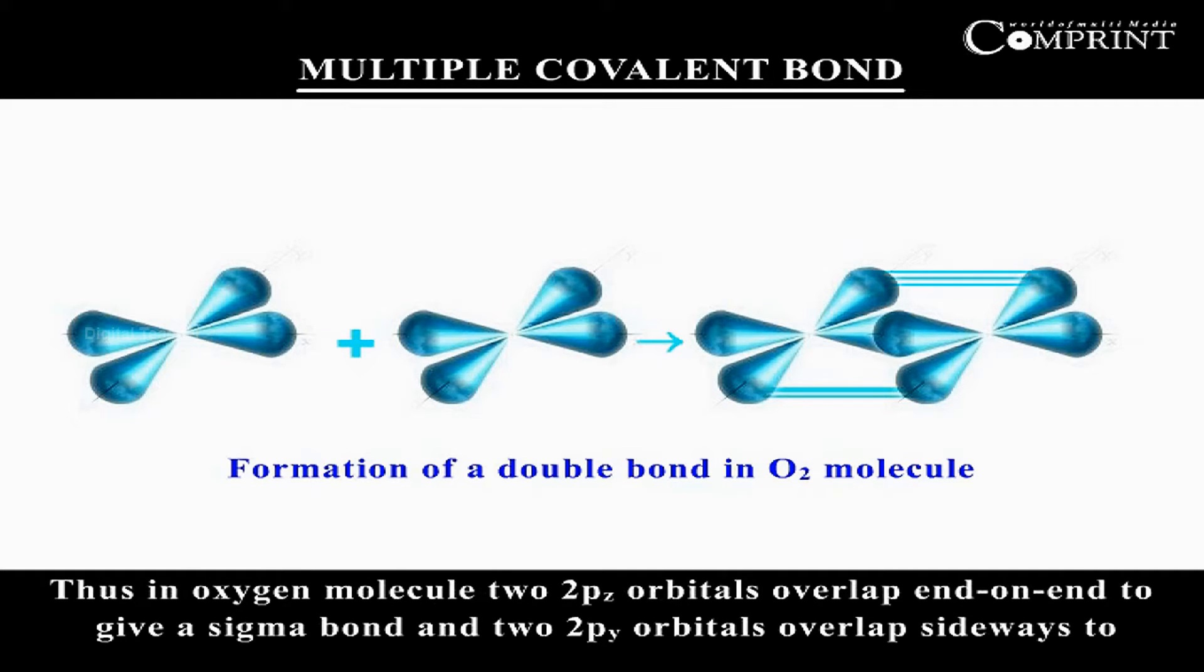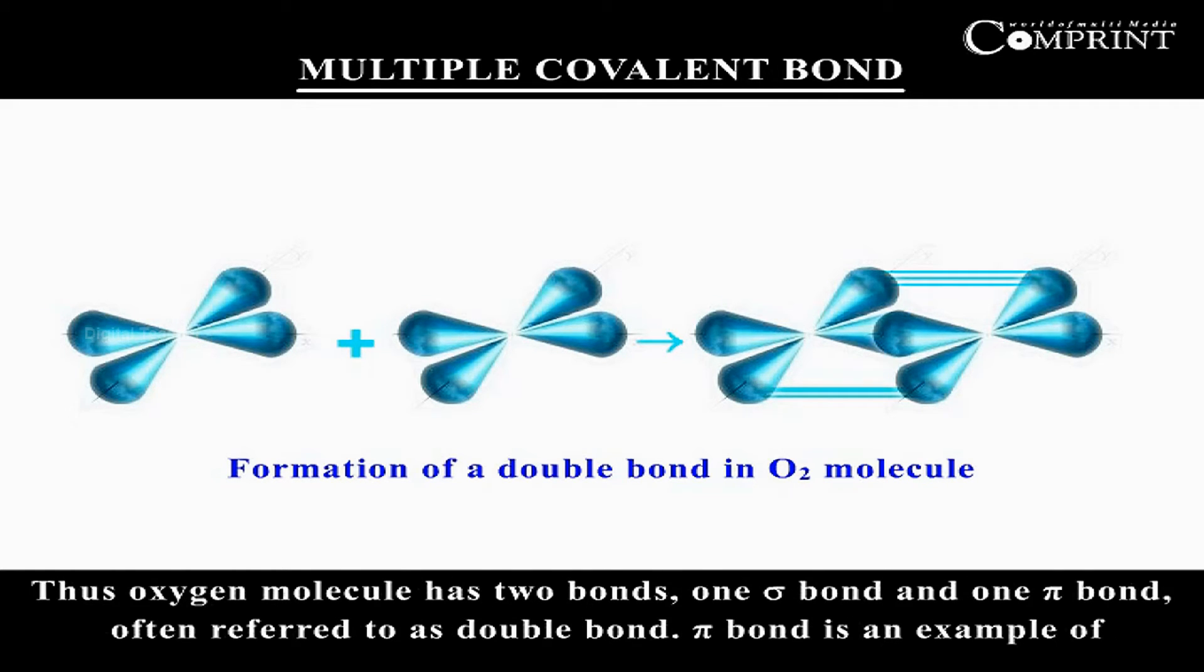Thus, in oxygen molecule, two 2pz orbitals overlap end-on-end to give a sigma bond and two 2py orbitals overlap sideways to form a pi bond. Thus, oxygen molecule has two bonds, one sigma bond and one pi bond, often referred to as double bond.